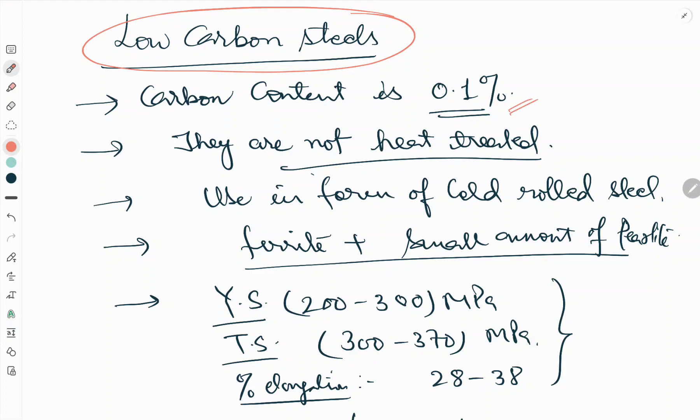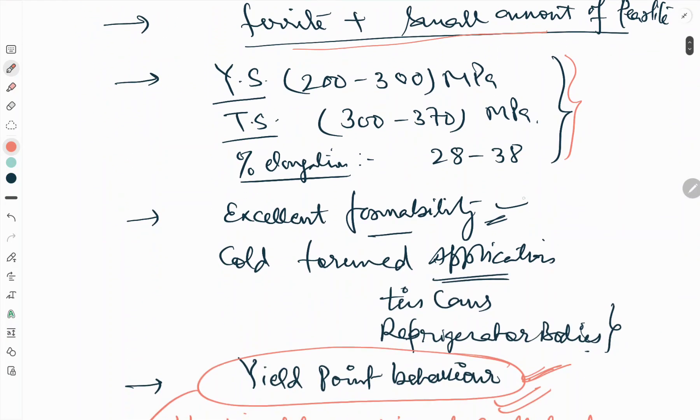These are the few facts regarding low carbon steel. Due to the carbon percentage, this is low carbon steel. They are not heat treatable because very low carbon percentage, so the hardenability is too low to produce martensite. They are used in the form of cold rolled steel. Microstructure is ferrite plus pearlite. These are the mechanical properties and it has excellent formability.